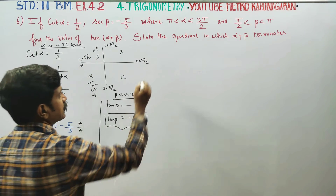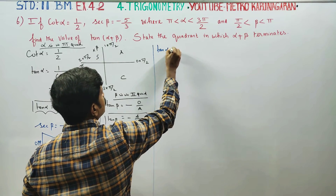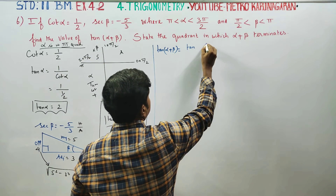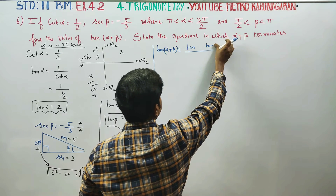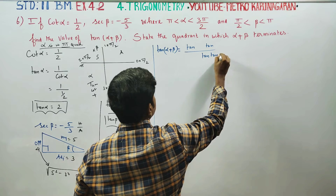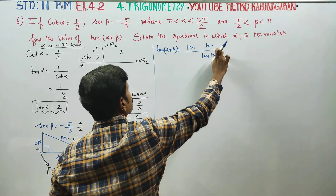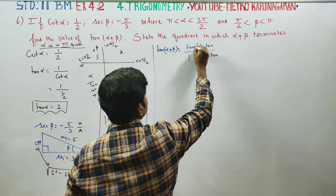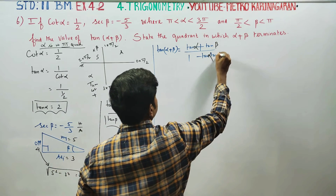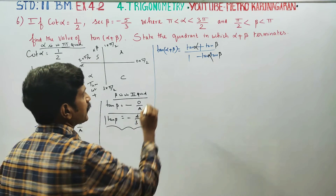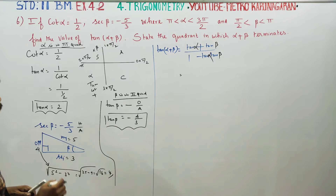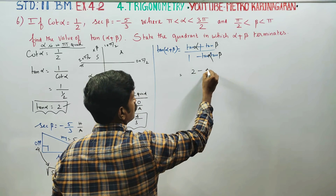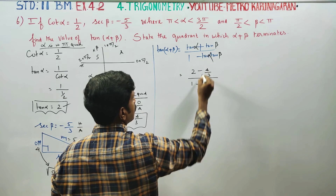Next, we find tan(α + β). The formula for tan(α + β) is: tan α plus tan β, all divided by 1 minus tan α times tan β. Substituting: tan α is 2 and tan β is minus 4 by 3. So the numerator is 2 plus (minus 4 by 3).